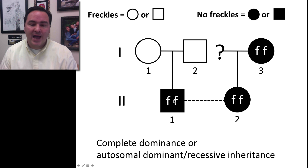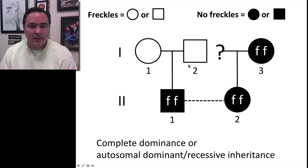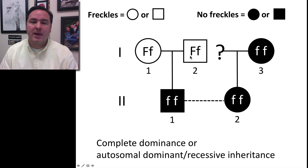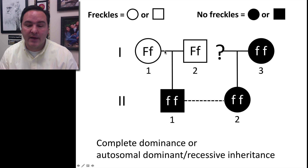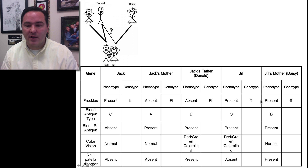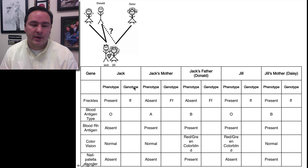If Jack is little f, little f, then what are Jack's parents? They both have to be big F, little f, because each of them had to have given a little f to Jack, but each of them also has freckles, so they each need a big F as well. So we can fill in our chart with the genotypes of all the people in this family.